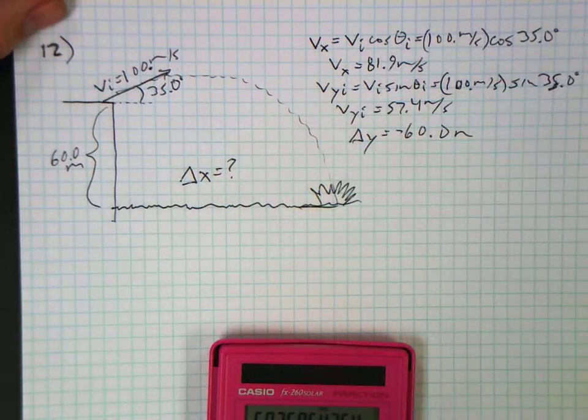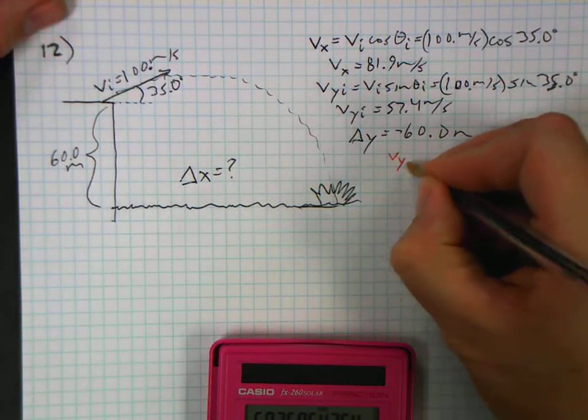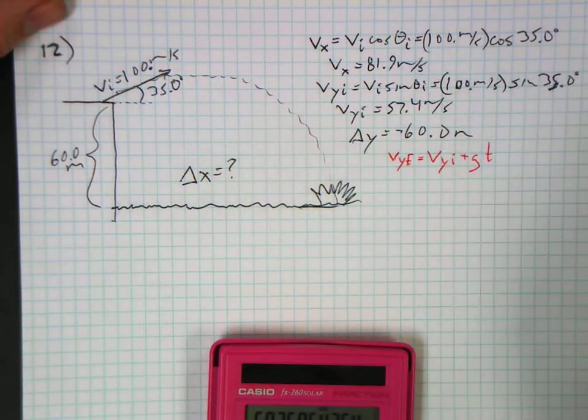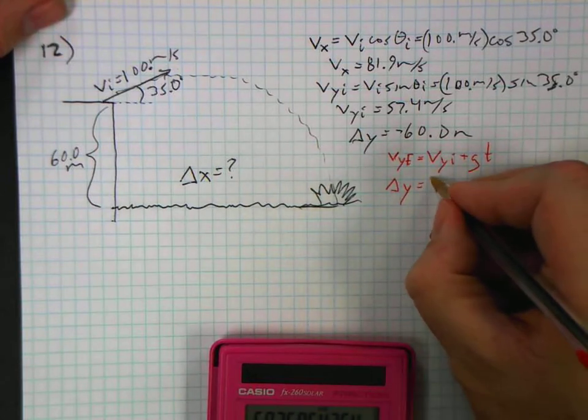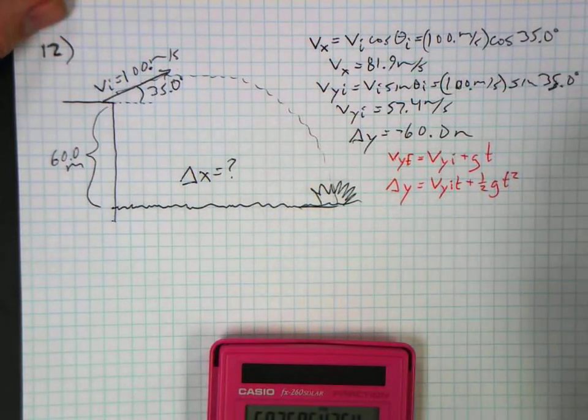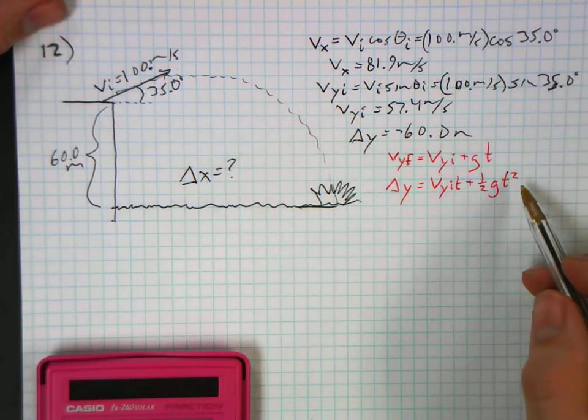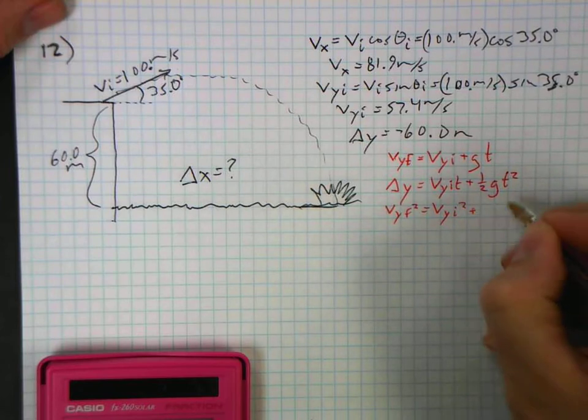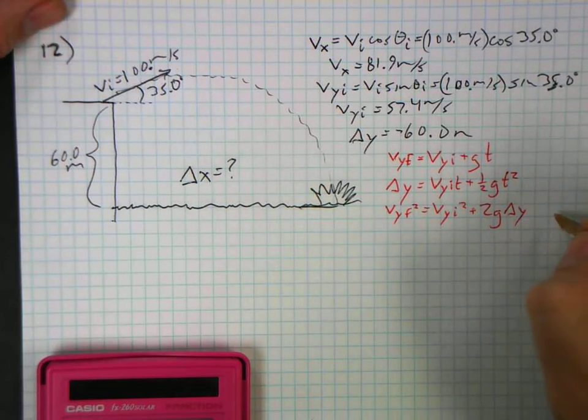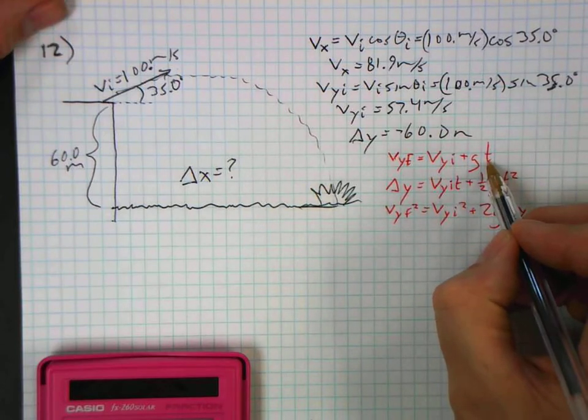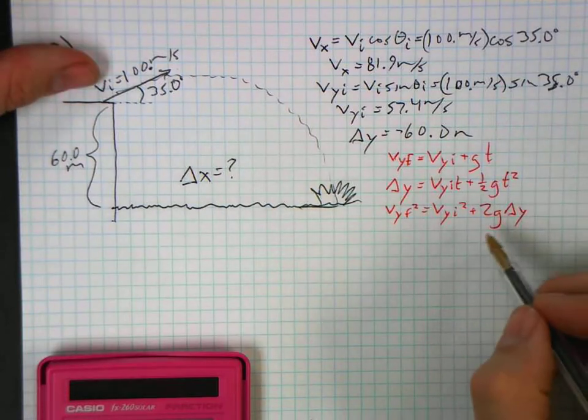So in the y direction, I'm just going to list out my kinematics because I can't think without seeing them. V y final equals v y initial plus g times t—not using that because I don't know v y final. Delta y equals v y initial times t plus one half g times t squared. I might be able to use this to find time, but that's going to use a quadratic. V y final squared equals v y initial squared plus two times the acceleration times the displacement. I can use this one to find my v y final and then use that v y final with v y initial to find the time. That's the avoidance of the quadratic.